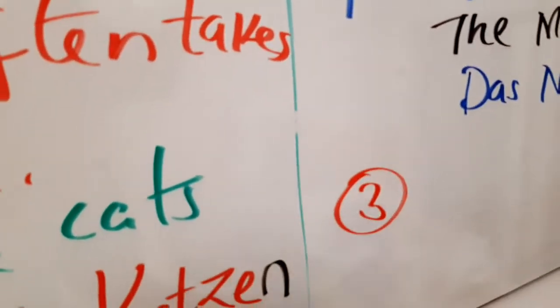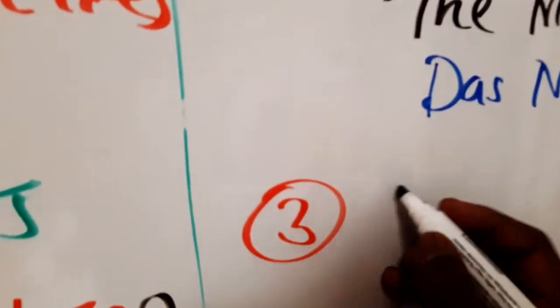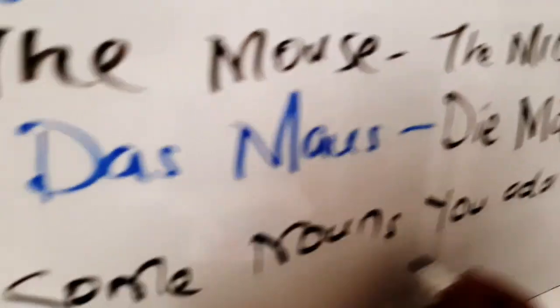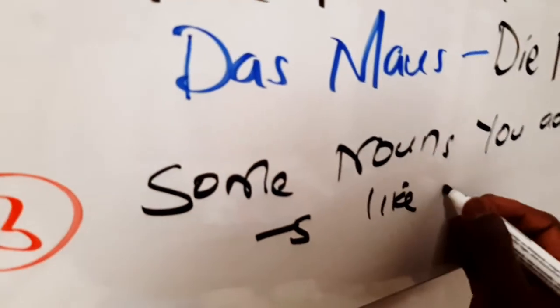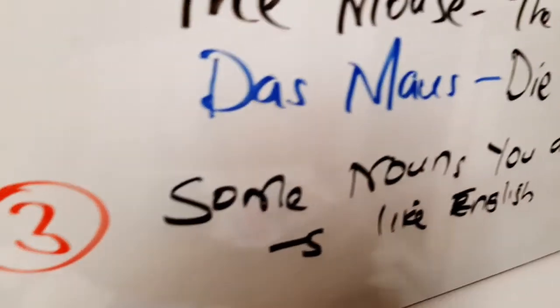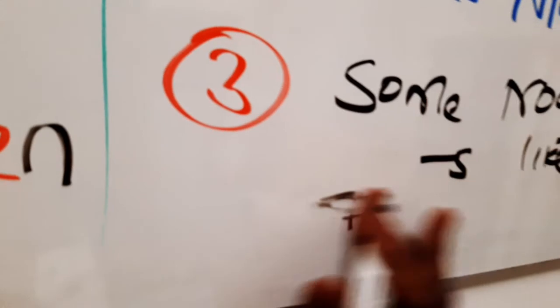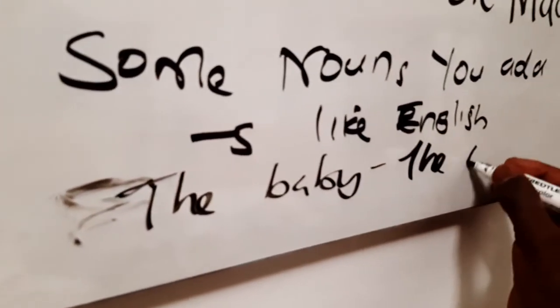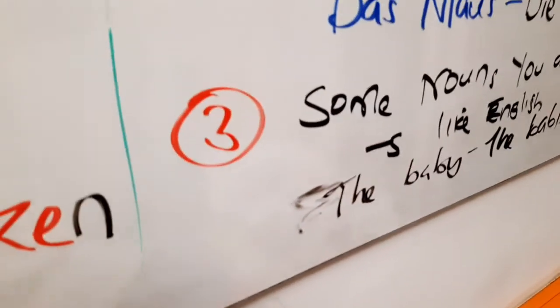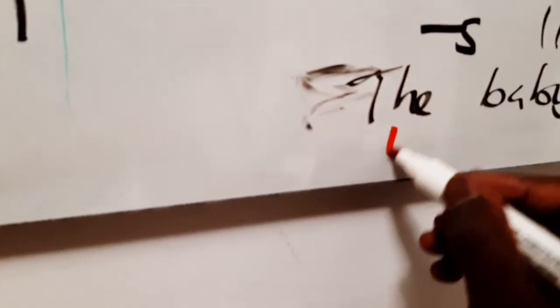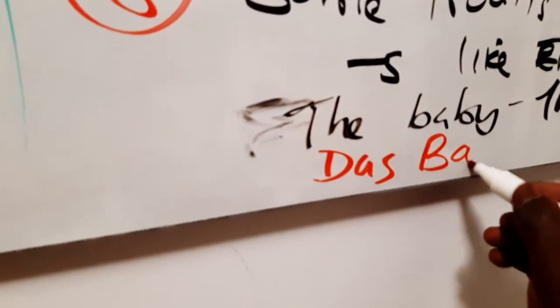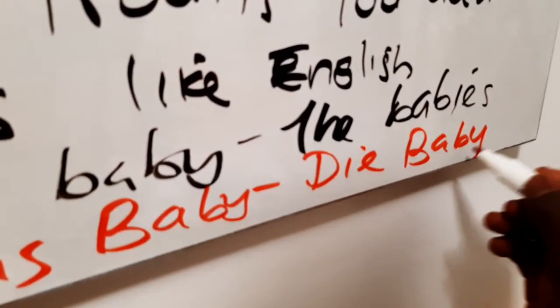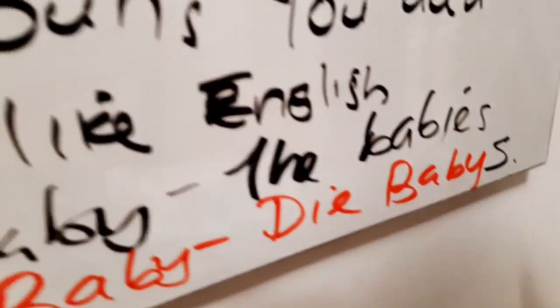And lastly, some nouns you add -s like English. Like in English, for example the baby. You see the babies, for example, in English. But in German this will be das, because it's neutral, das Baby, and in plural it will be die Babies. So you add -s, Babies. So it looks so weird.